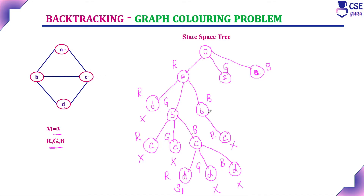Can I assign green to C? Yes, that is possible because A is assigned with red and B is assigned with blue, so we can assign green to C. Next, for vertex D — red is assigned to A, blue is assigned to B, and green is assigned to C. Can I assign red to D? Yes. This is a solution — solution 2.